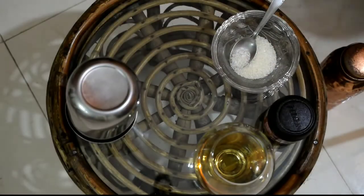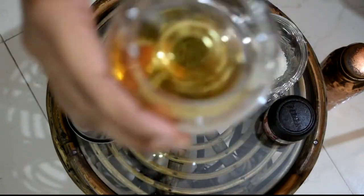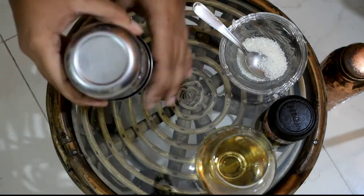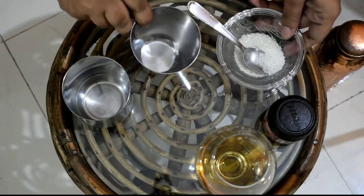For scotch, I have again used Monkey Shoulder, which is my personal favorite. You can try out other options as well. 30 ml of Monkey Shoulder I've used here. In a glass, you just need to put a small tablespoon of sugar.